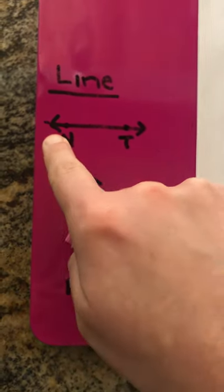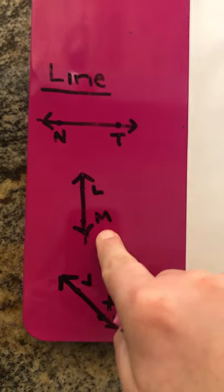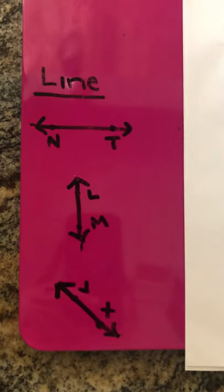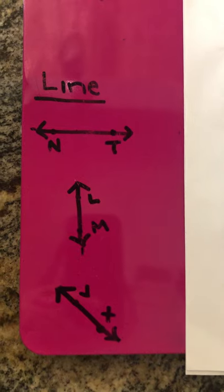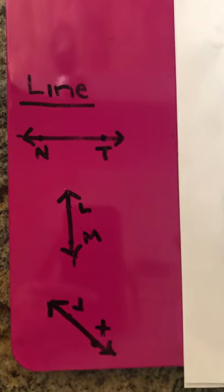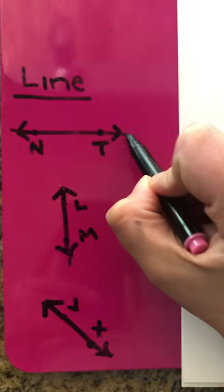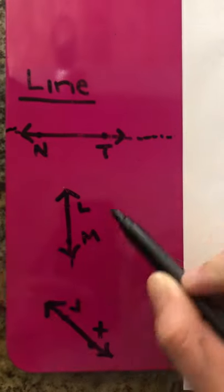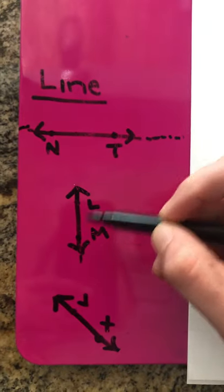Now, what you see at the ends of each of these lines are two arrows. In math, those two arrows means that they can go on and on forever. So that means that this line could extend on and on in both directions because there are two arrows.